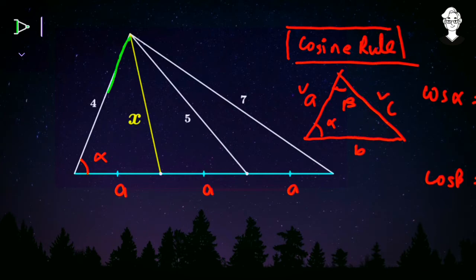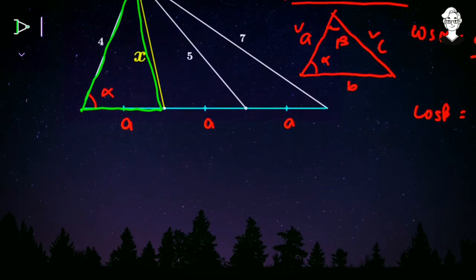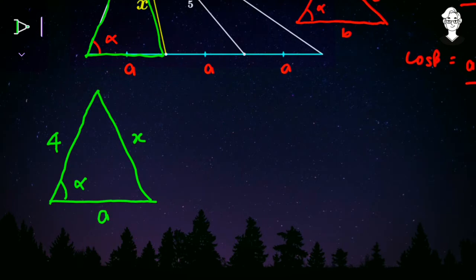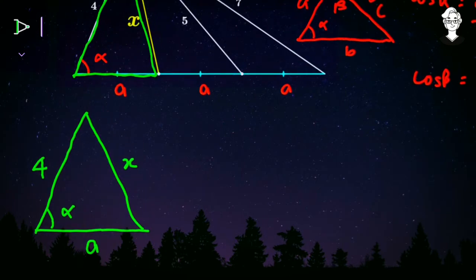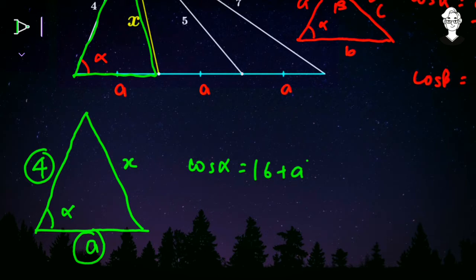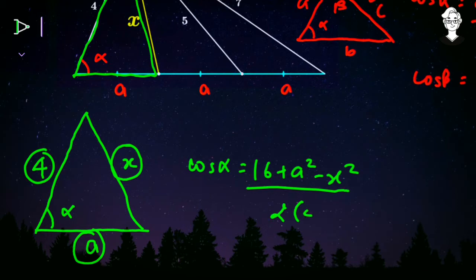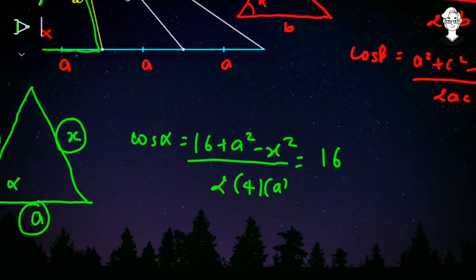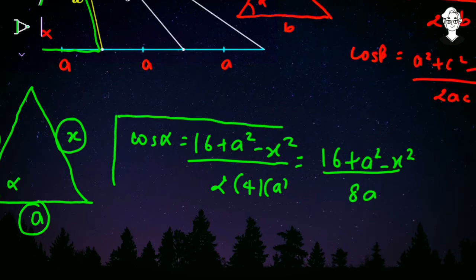I will apply the cosine rule in the first triangle. Let us redraw that triangle: this angle is alpha, this side is 4, this side is x, and the base is a. So cos alpha equals 4² + a² − x², divided by 2 times 4 times a, which gives cos alpha = (16 + a² − x²) / (8a). That is the value of cos alpha in the first triangle.